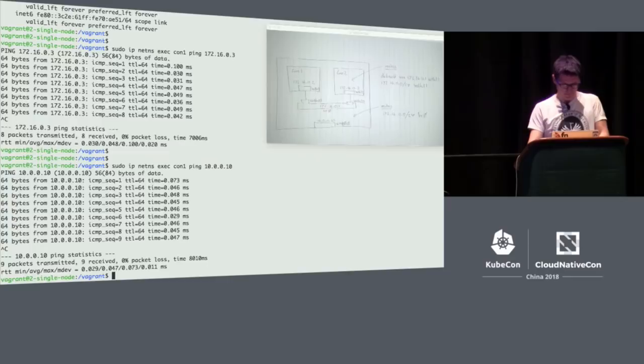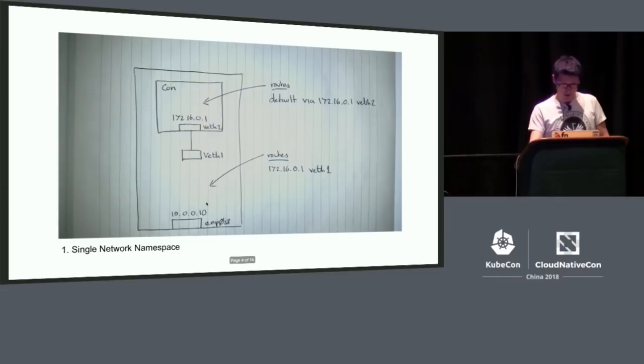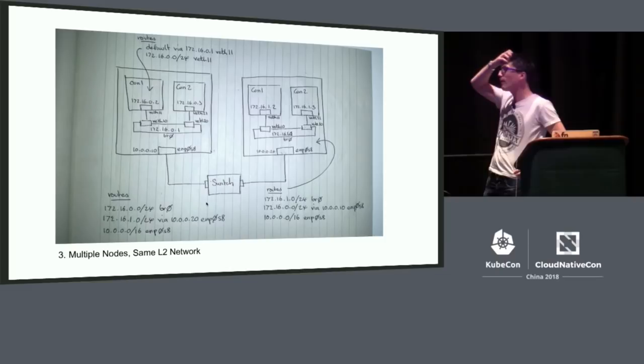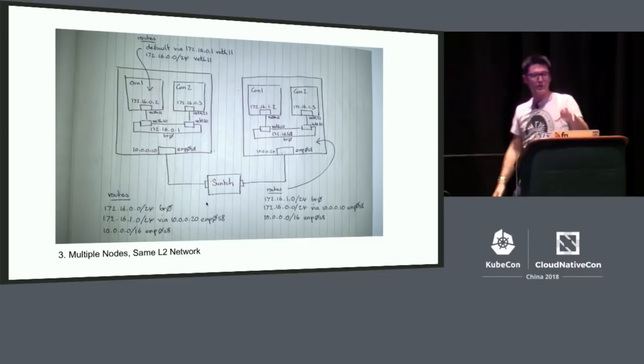Now we're doubling up again. The key point about this case is both nodes are on the same layer 2 network — they're just connected by a switch. The node on the left has 10.0.0.10, the node on the right has 10.0.0.20. They're in the same subnet. Each one is the same as before: two containers in each connected with VEth pairs, a bridge on each.